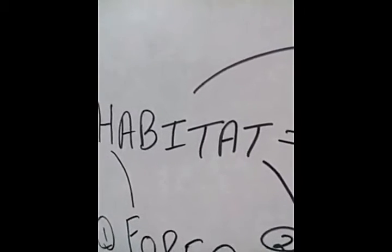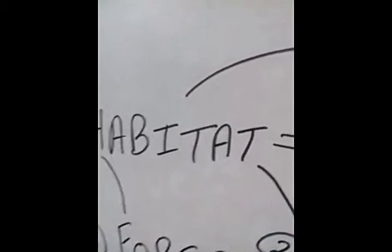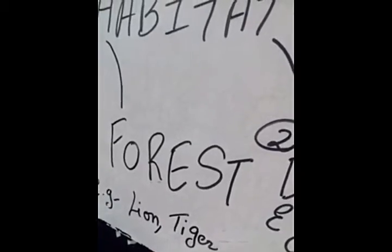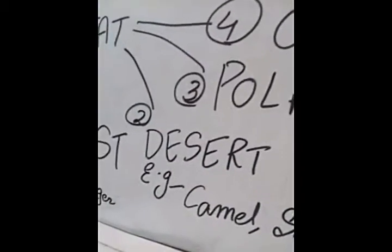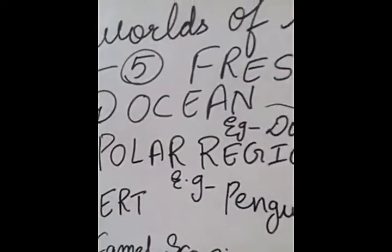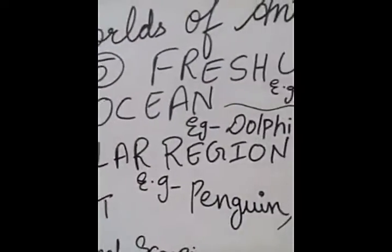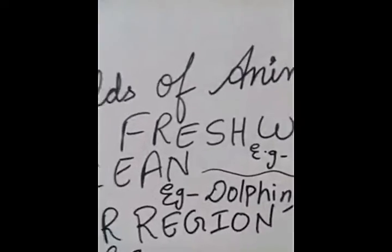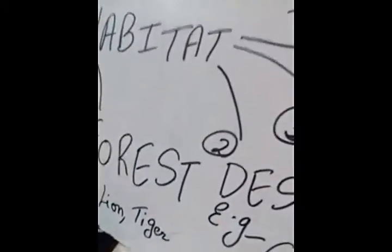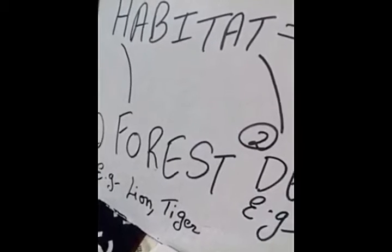There are five main habitats on the Earth. These are: first, forest; second, desert; third, polar region; fourth, ocean; and fifth, freshwater. We will now look at each of these habitats one by one, starting with the forest.